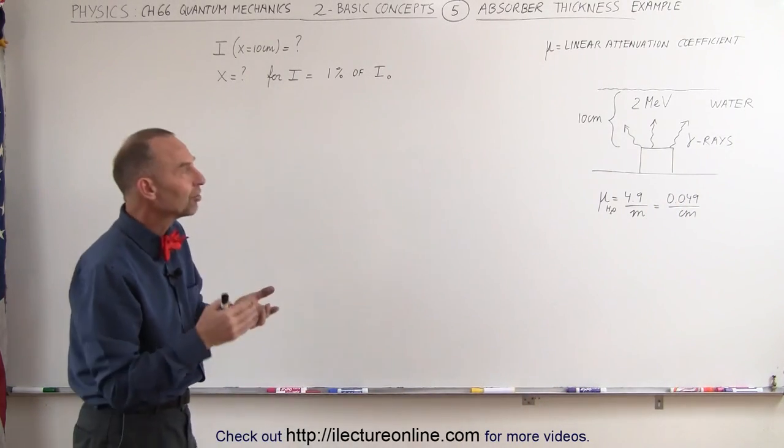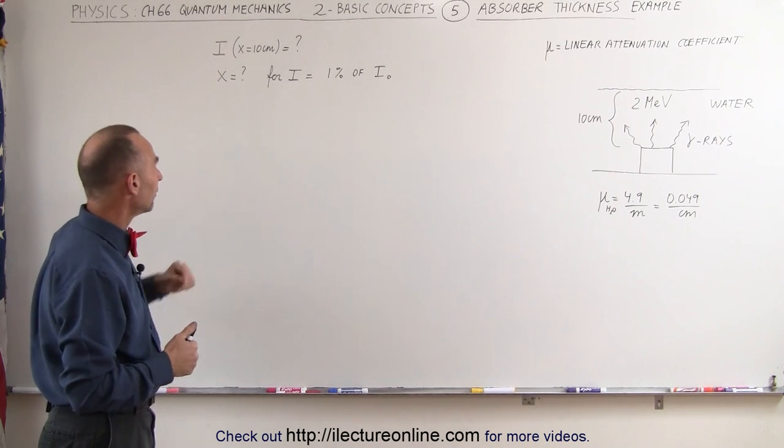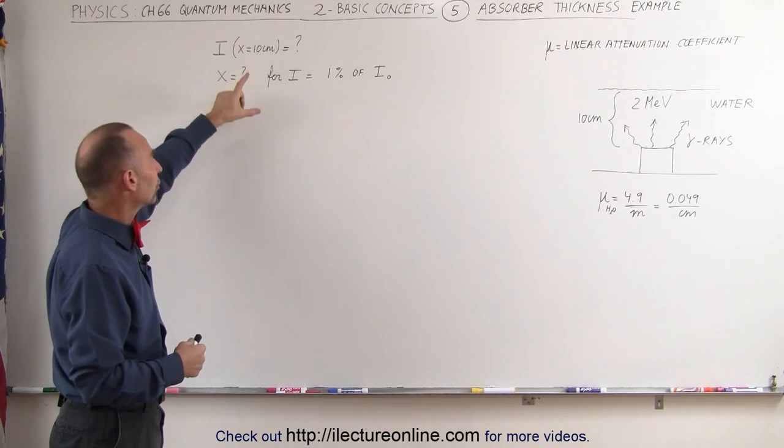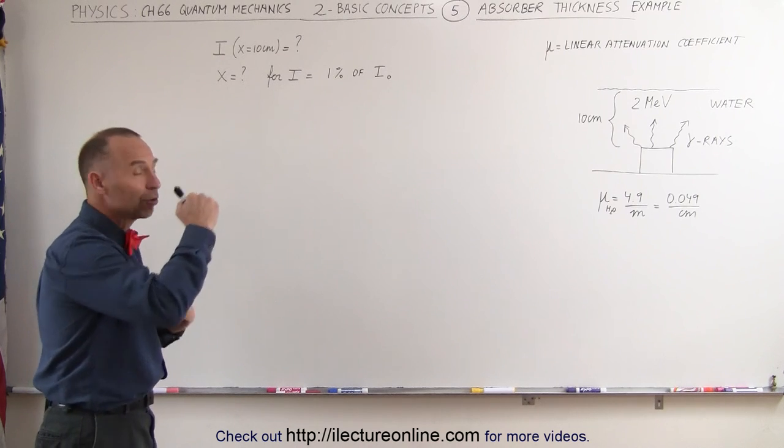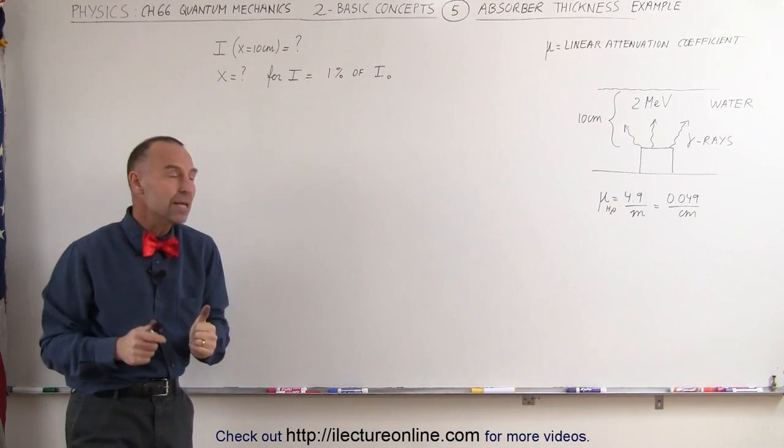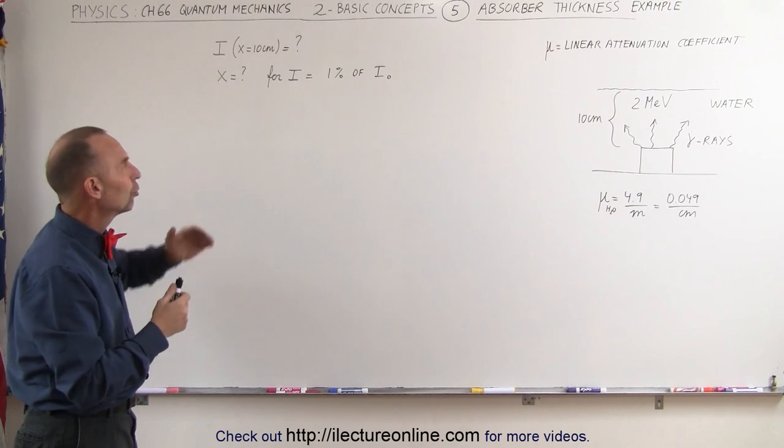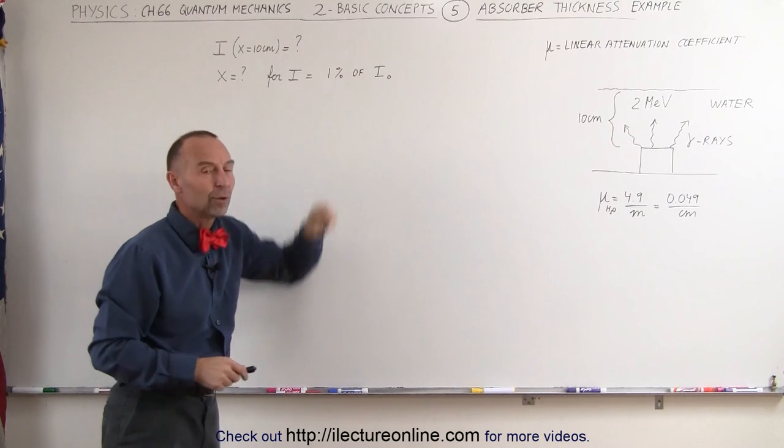We want to know how much that attenuates the radiation by the time it reaches the surface. We want to therefore calculate the intensity when the thickness of the material is 10 centimeters and finally want to calculate how thick the material, in this case water, needs to be to protect us from the radiation to the point where we want to get the intensity down to 1% of the original intensity.